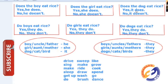For an animal we use 'it'. Does it eat? Yes, it does. No, it doesn't. Does it sleep? Yes, it does. No, it doesn't. Does it go? Yes, it does. No, it doesn't. Now for plural form — two boys, two girls, dogs — we use 'they'. Do boys eat? Yes, they do. No, they don't. Do boys drive? Yes, they do. No, they don't. Do girls like? Yes, they do. No, they don't. Do girls grow? Yes, they do. No, they don't. Do dogs dance? Yes, they do. No, they don't.